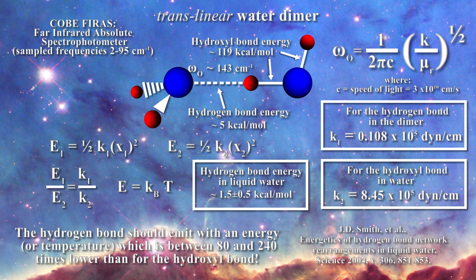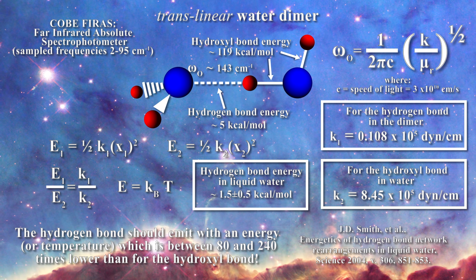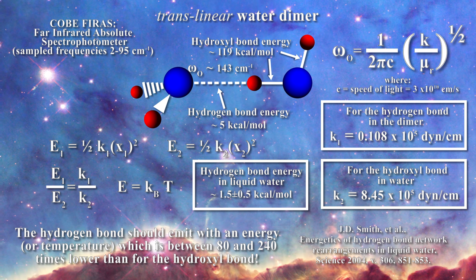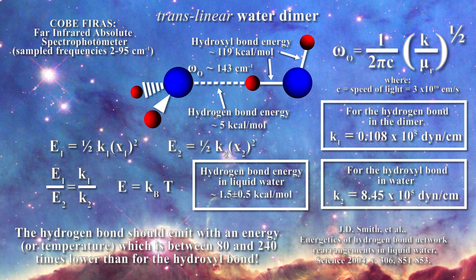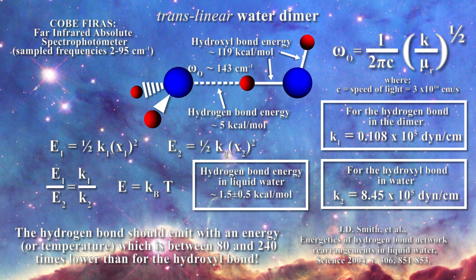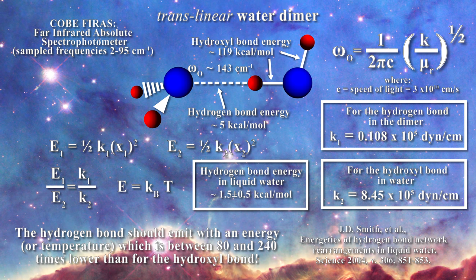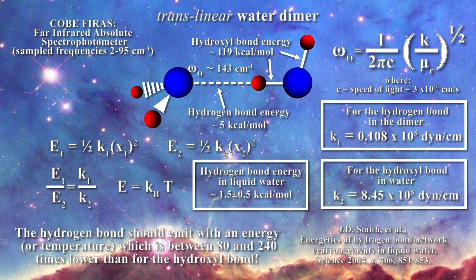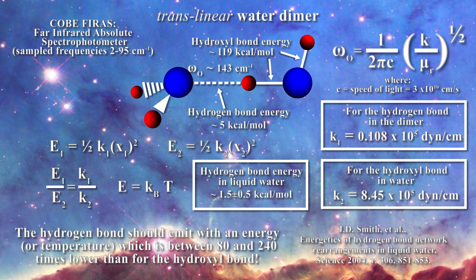This is the problem in assigning the microwave background to the cosmos. When water has a temperature of 300 Kelvin, it is predicted that the hydrogen bond is emitting somewhere in the electromagnetic spectrum such that it is manifesting a temperature which is 80 to 240 times lower. One can now readily see that the observed 2.7 Kelvin temperature associated with the microwave background falls within this range. It is clear that the hydrogen bond has a profound effect on the behavior of water in the liquid state.